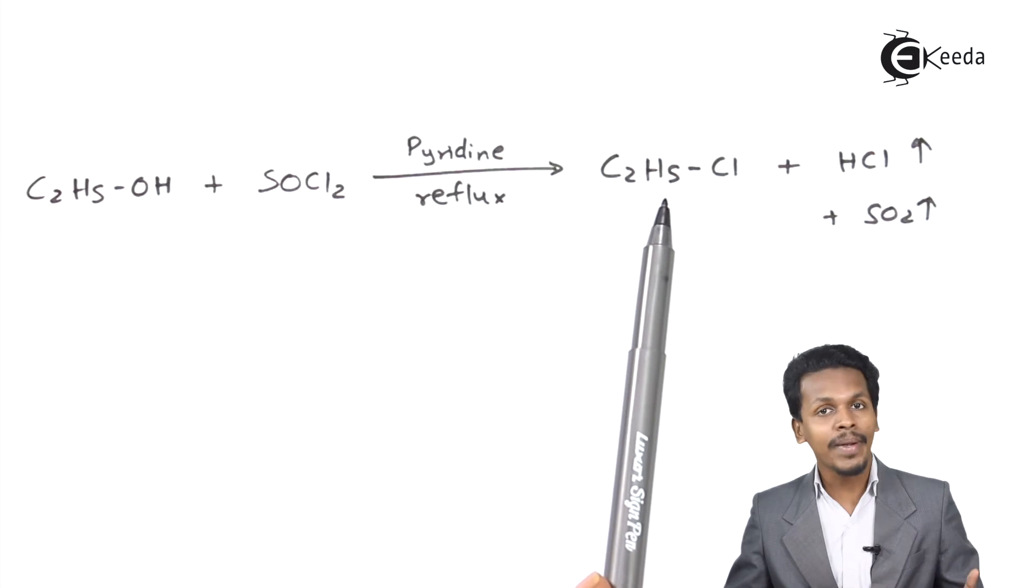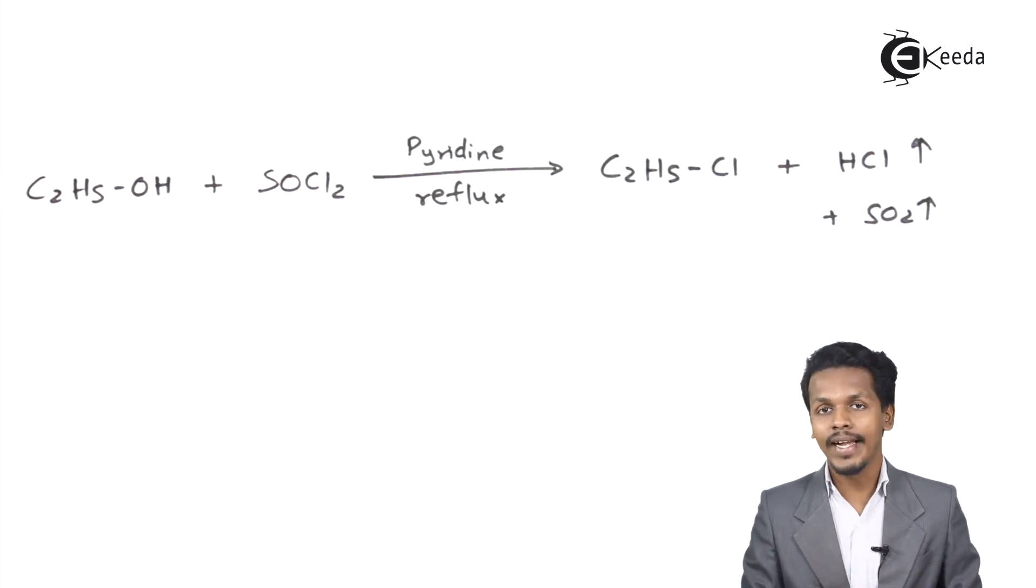This is how we can obtain ethyl chloride at higher percentage or higher yield. An alcohol can be converted into an alkyl halide by using SOCl2. This was the general reaction and the example related to it.